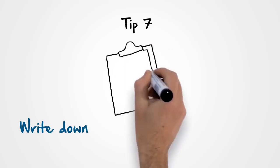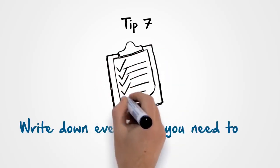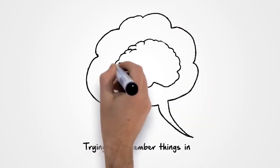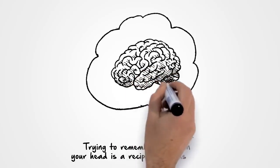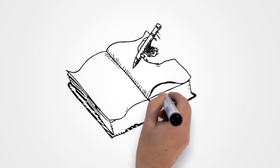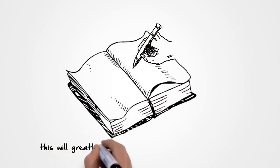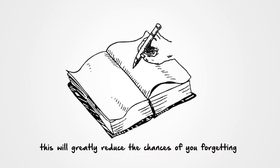Tip 7. Write down everything you need to do. Trying to remember things in your head is a recipe for disaster. Keep a notebook for writing things down, as this will greatly reduce the chances of you forgetting anything.